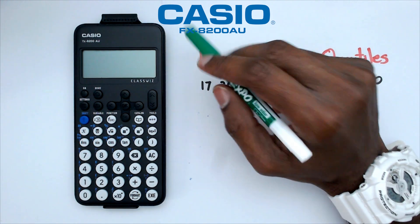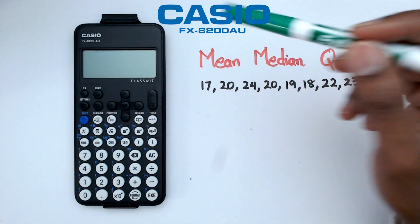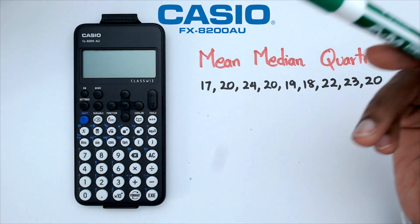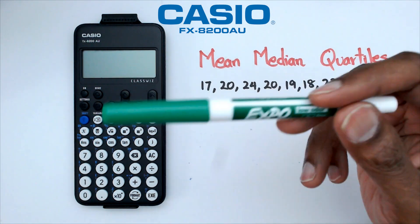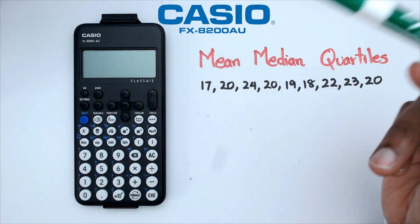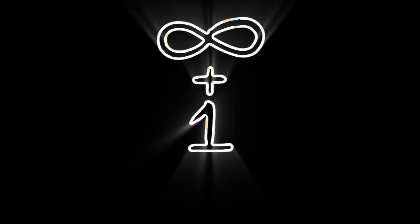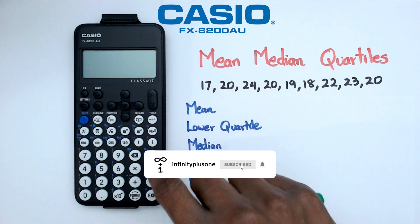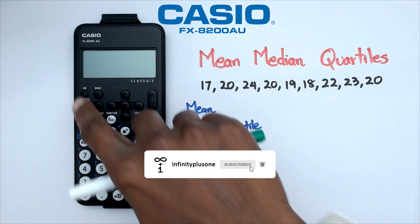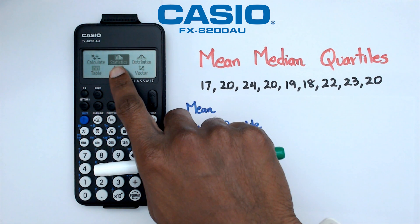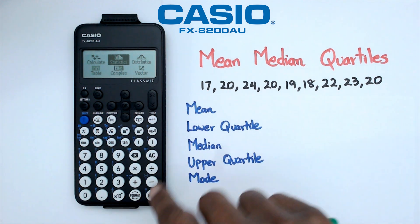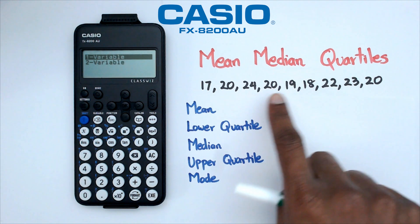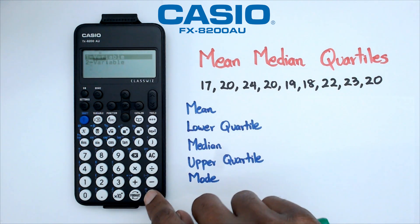Hey folks, welcome to another how-to Casio video. In this video we're going to be looking at how to find the mean, median, and quartiles for a particular data set on this FX-8200 AU calculator. So without further ado, let's get started. With this calculator, we want to switch it on first — that would be a good start — then go down to statistics mode on the main menu, click on statistics, and since we have one variable, click on one variable.